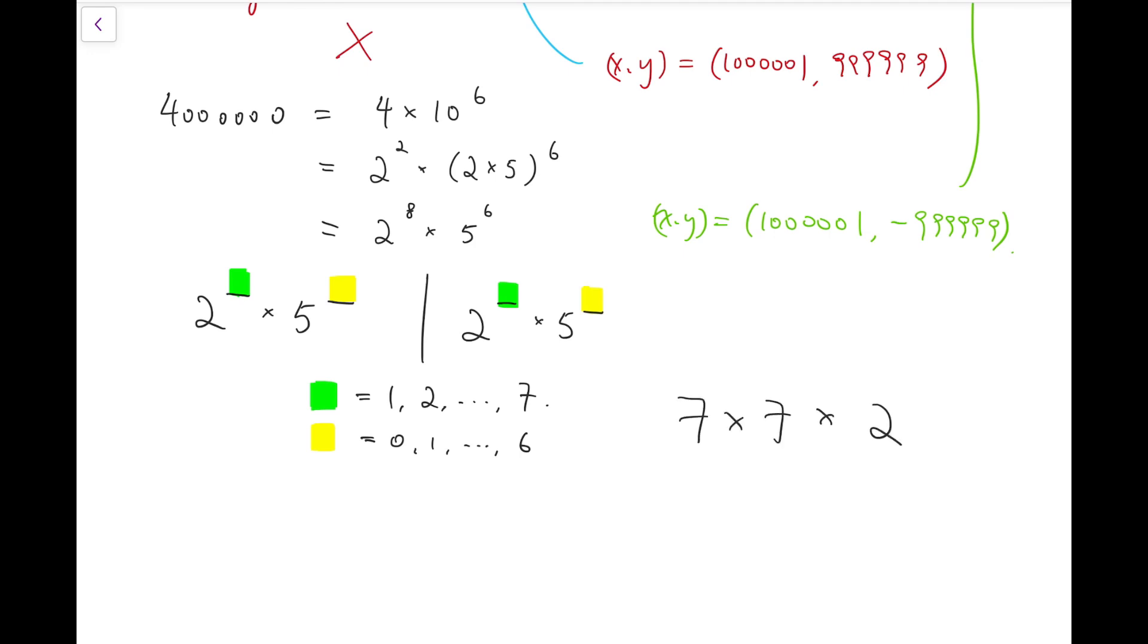So all together, our final answer should be 7 times 7 times 2, which is 98 solutions. This is the final answer.